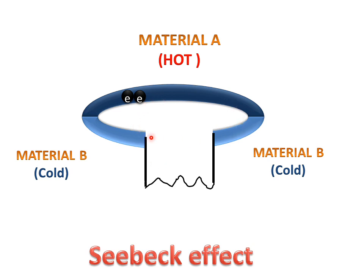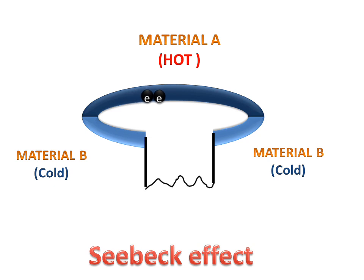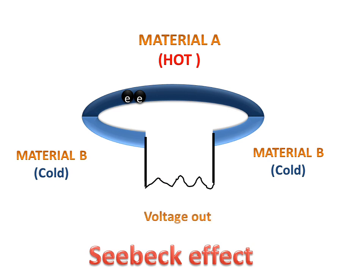When electrons flow from the hot to the cold material, electrons will flow through the load. And the load will show the voltage, and the voltage will be output from this load.